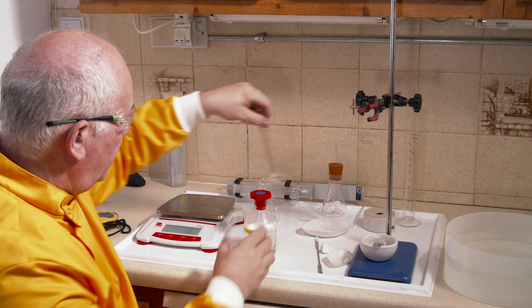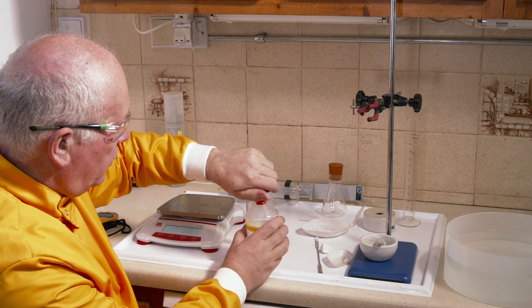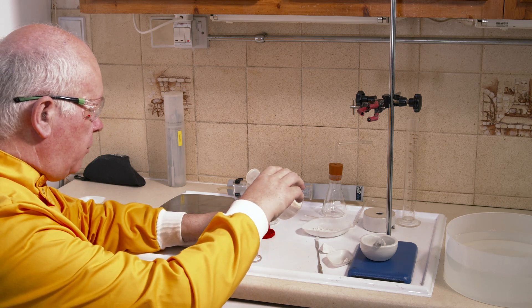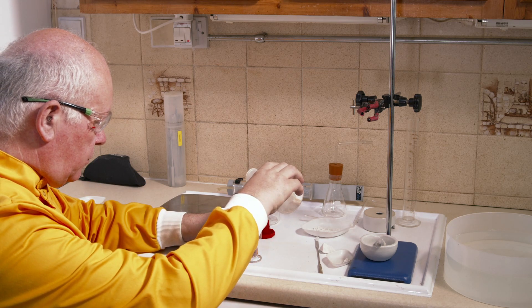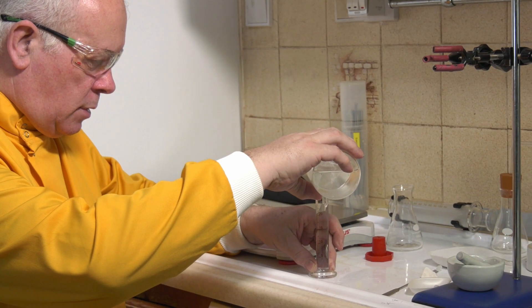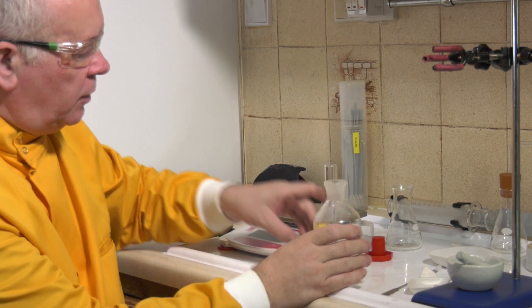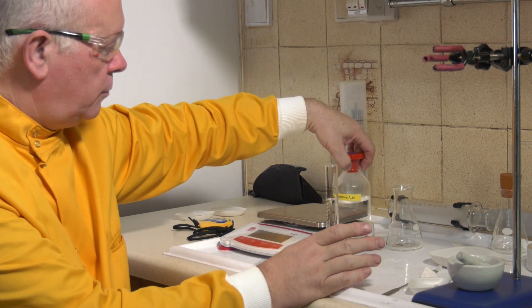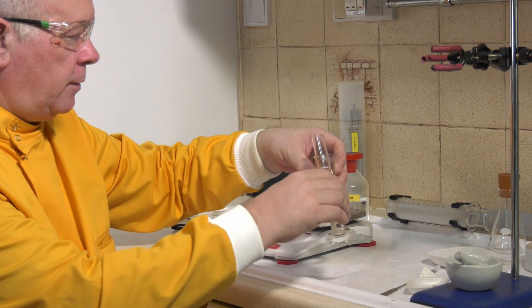We're going to use about 25 centimeter cubed of hydrochloric acid. It's going to be excess, so the exact amount doesn't really matter, but for consistency I'm going to use the same amount in each of the experiments.